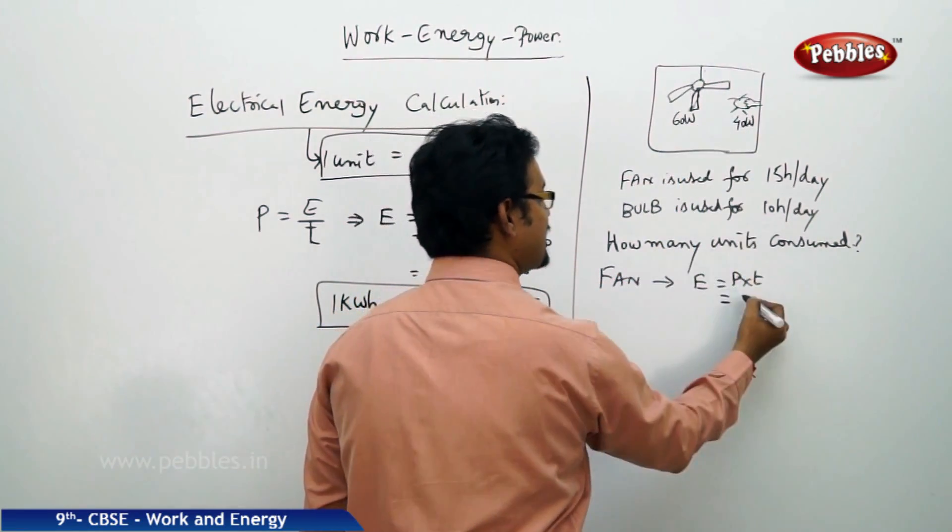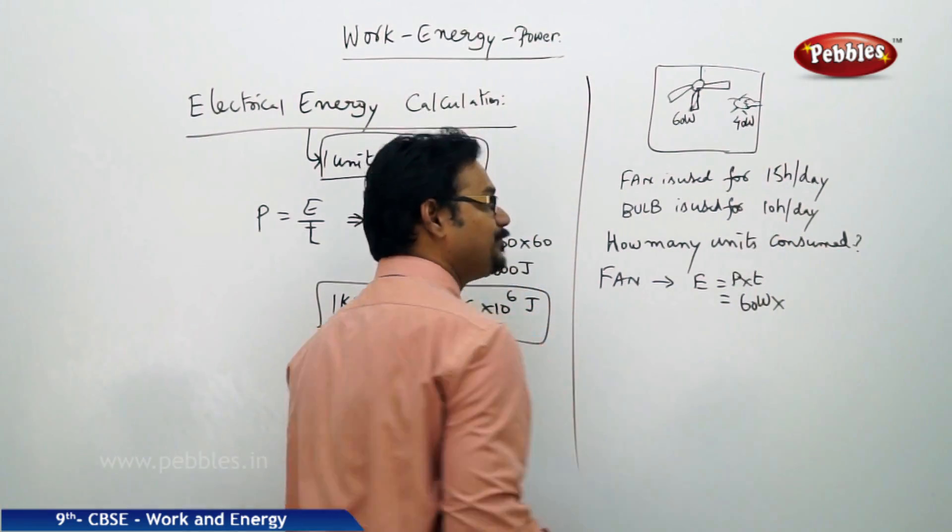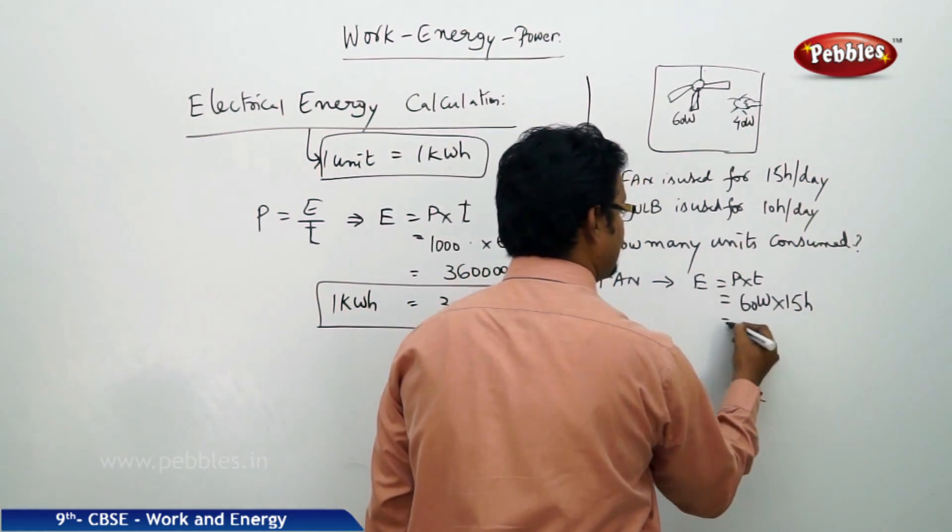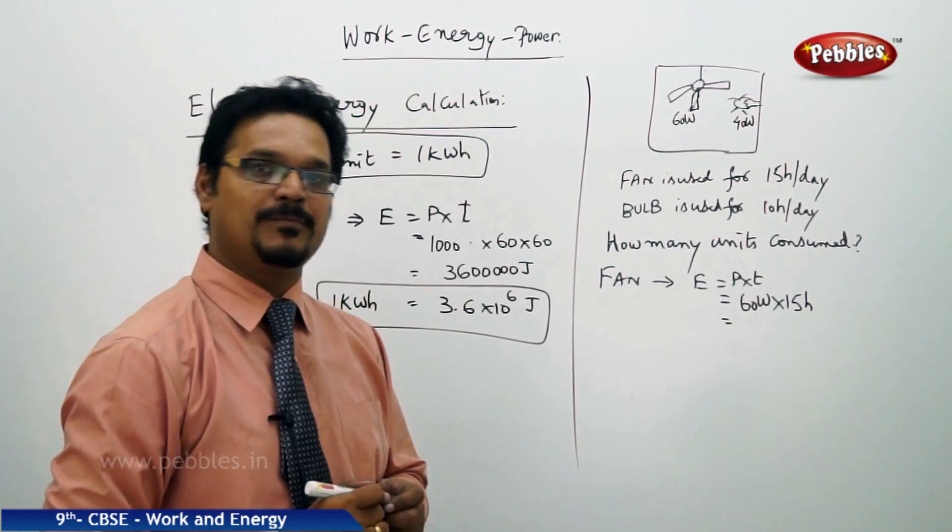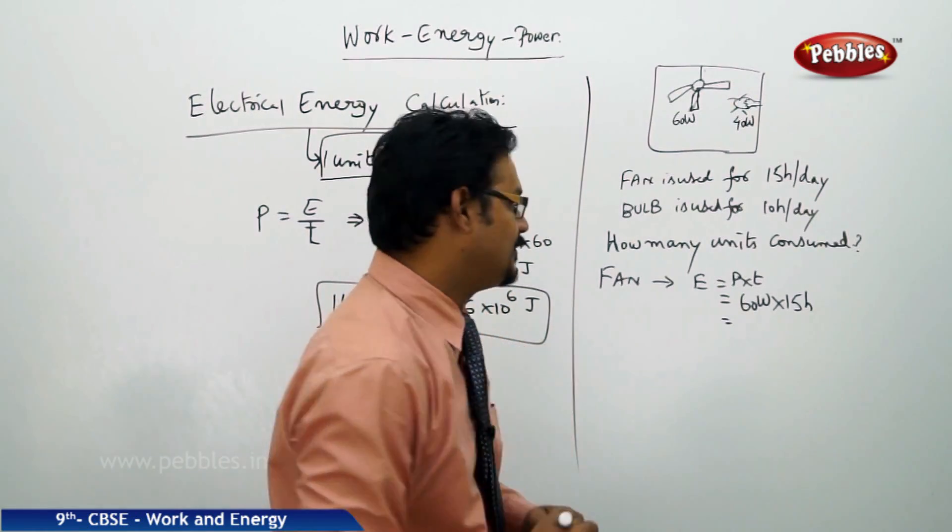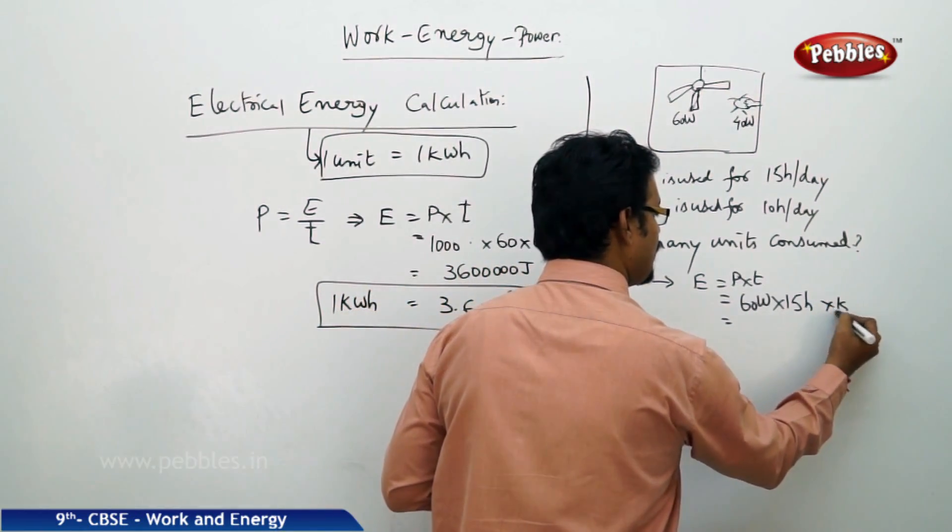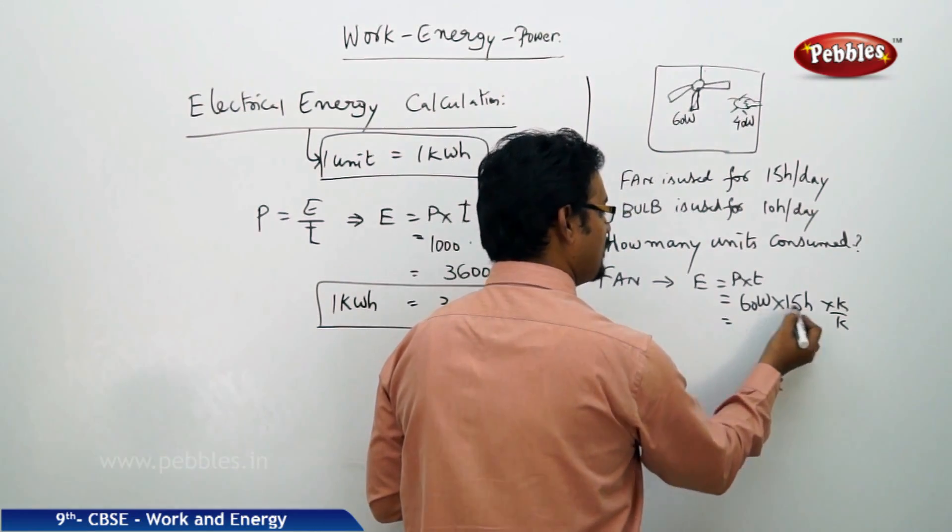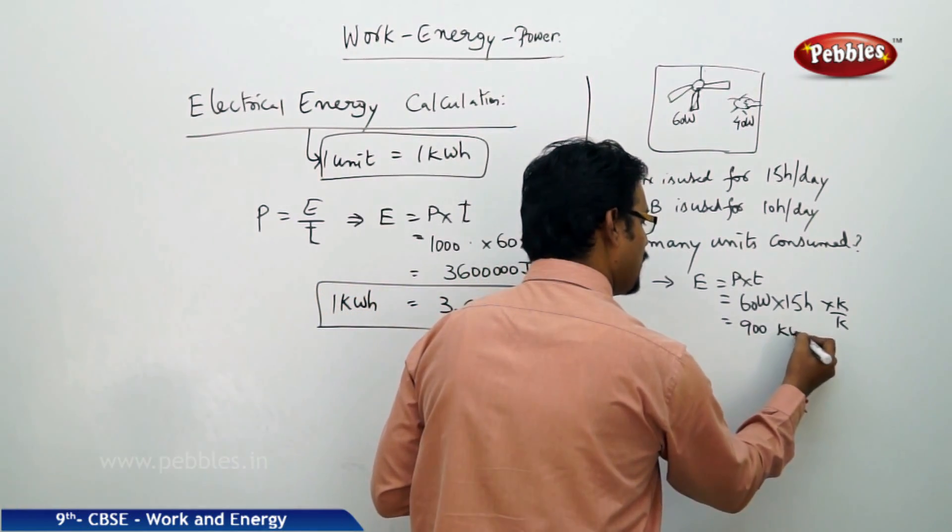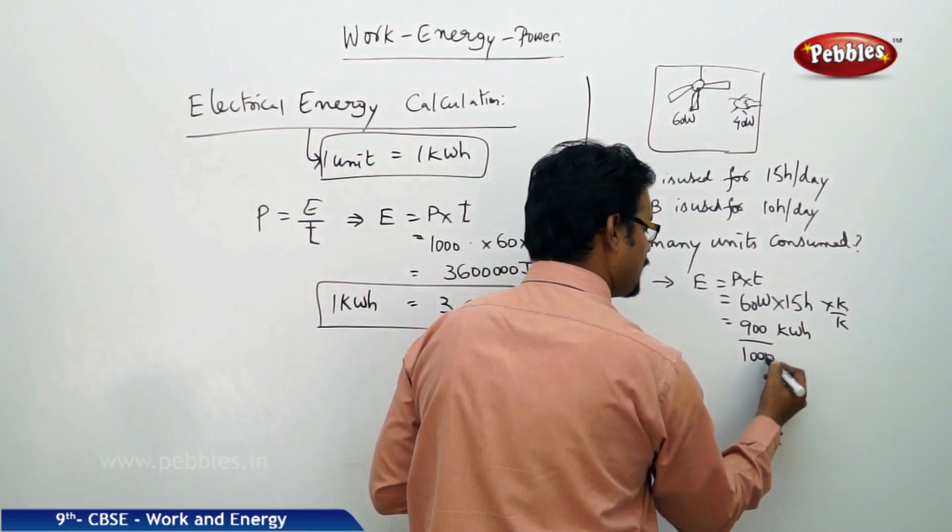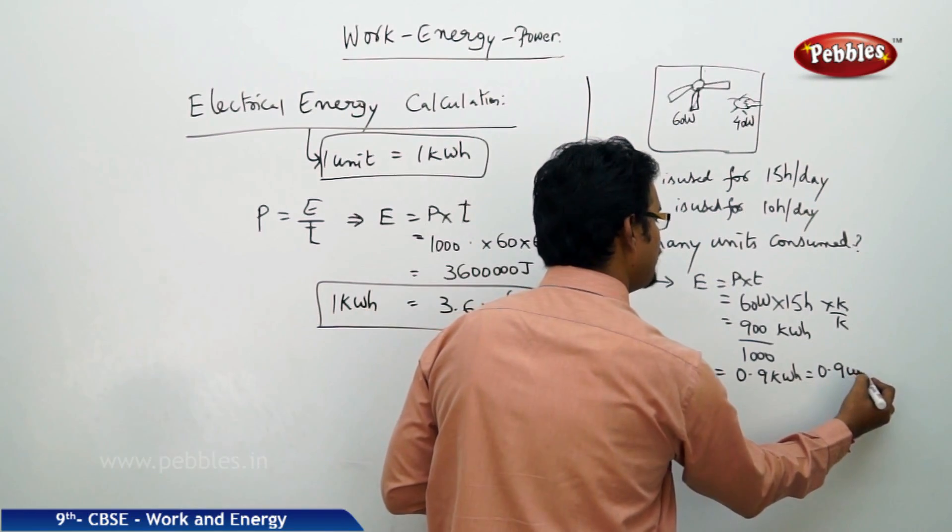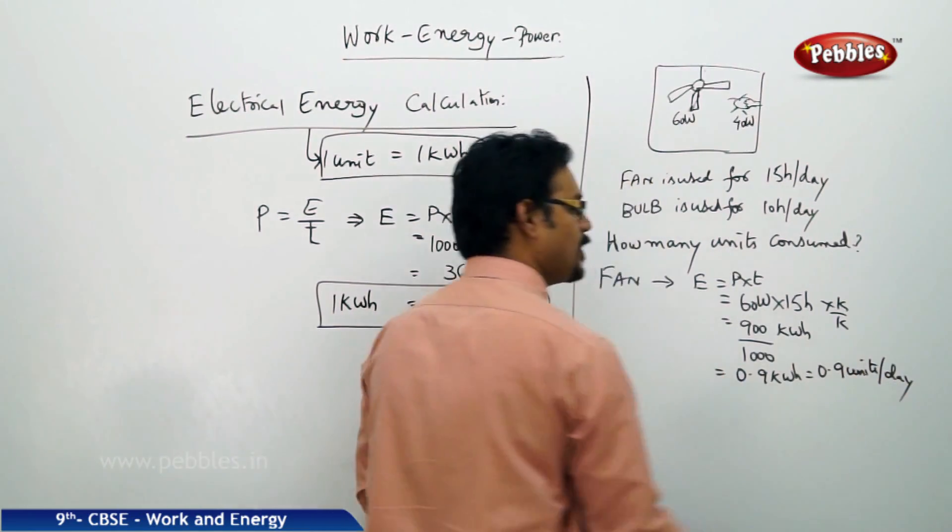60 watts and time is 15 hours. Now what we do here, little tricky, we play the mathematical trick. Because we know that one unit is kilowatt hour, convert this number in terms of kilowatt hour. After substituting this, you multiply kilo divided by kilo. Then what happens, 15 times 6, 900, 900 kWh by K. K means thousand, so this is how much, 0.9 kWh. That means you have consumed 0.9 units per day per fan.